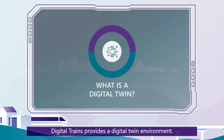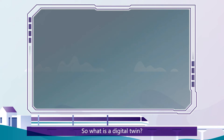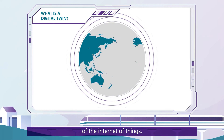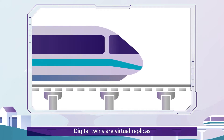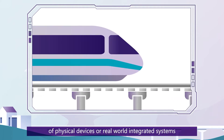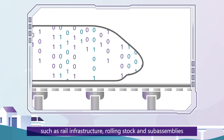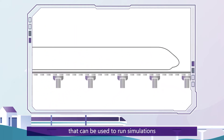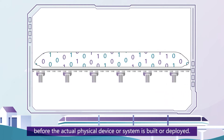Digital Trains provides a digital twin environment. So what is a digital twin? Digital twin technology is part of the emerging world of the Internet of Things, virtual reality and artificial intelligence. Digital twins are virtual replicas of physical devices or real-world integrated systems — such as rail infrastructure, rolling stock and sub-assemblies — that can be used to run simulations before the actual physical device or system is built or deployed.